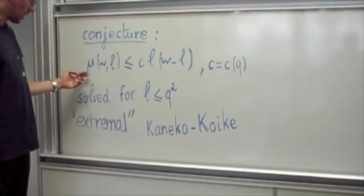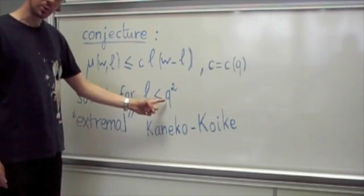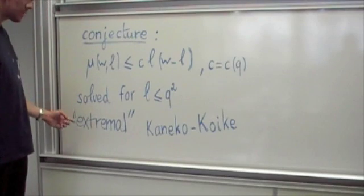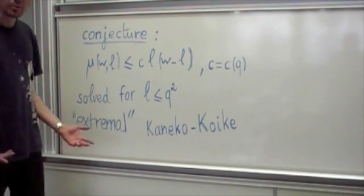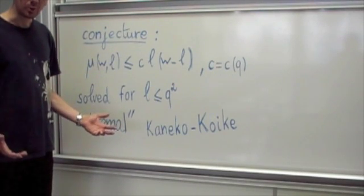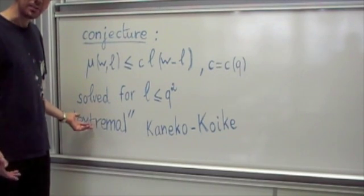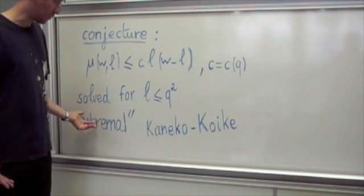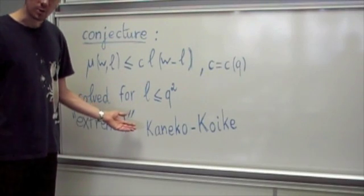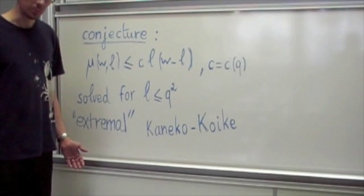We solved the conjecture only in the case in which L is less than or equal to Q squared by means of an explicit construction of two families of Drinfeld quasi-modular forms, which are extremal in the sense that they vanish at infinity as much as possible. Similar constructions were made by Kaneko and Koike in recent works.